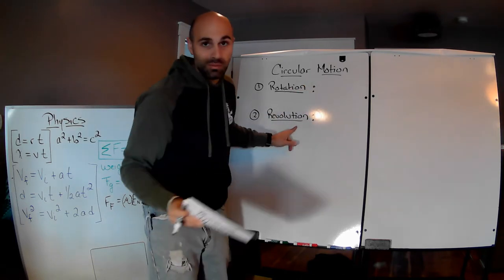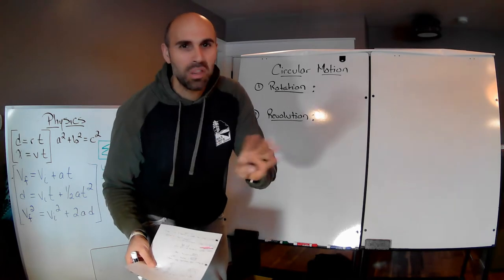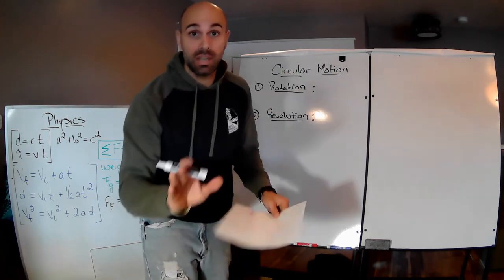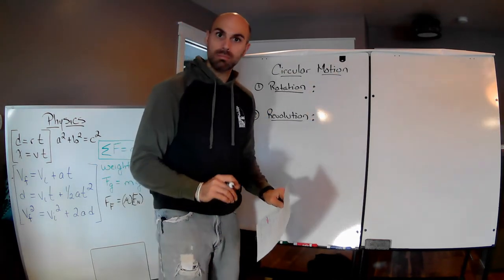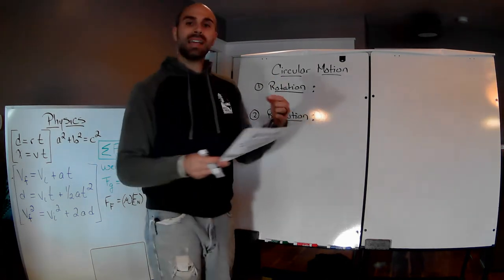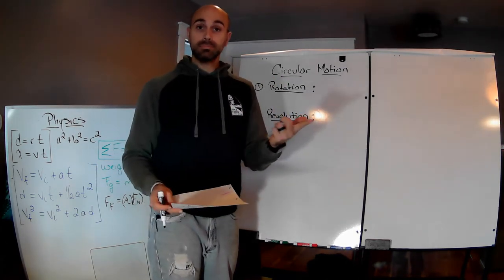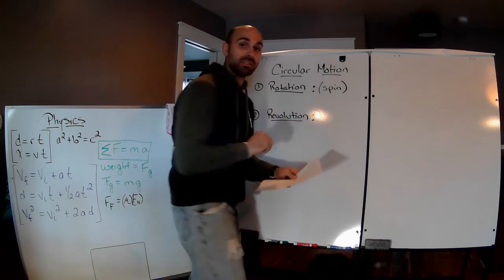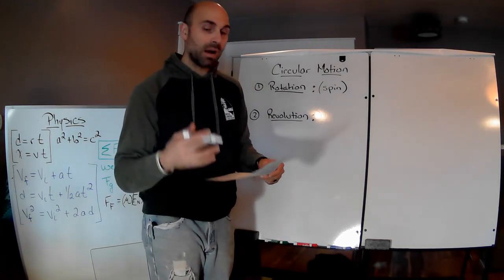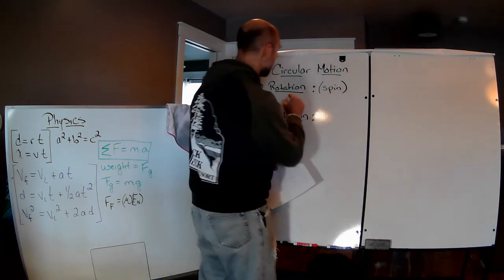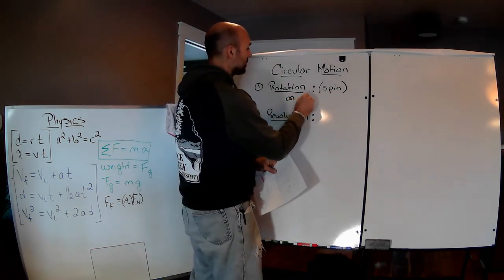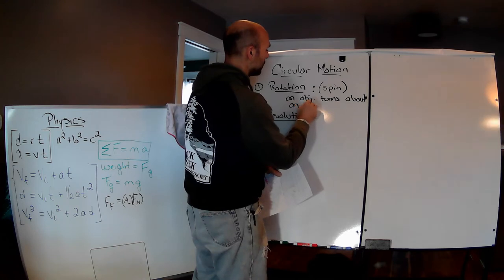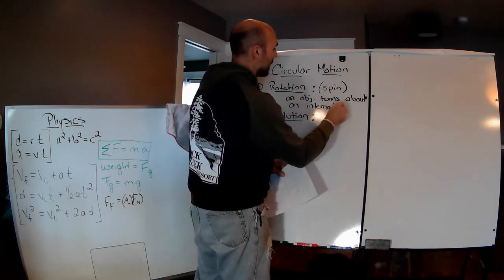We're not talking about revolution in terms of history — that's not a subject here; science is where it's at. So, Rotation: what exactly is a rotation? Rotation is also known as spin. It's when an object turns about an internal axis.